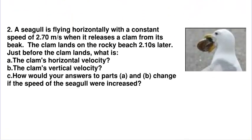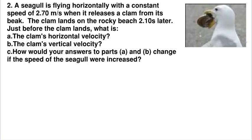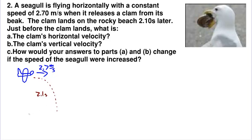Let's look at number 2. A seagull is flying horizontally with a constant speed of 2.7 meters per second when it releases a clam from its beak. The clam lands on the rocky beach 2.1 seconds later. Let's draw our seagull — it's flying horizontally at 2.7 meters per second, drops a clam, and the clam falls to the earth, taking 2.1 seconds to hit the ground below.